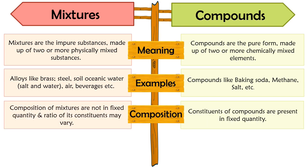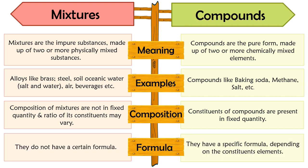Composition: the composition of a mixture is not fixed — the quantity and ratio of its components may vary. In contrast, the constituents of compounds are present in a fixed ratio. Formulas: mixtures do not have specific formulas to represent them. On the other hand, compounds have specific formulas depending upon the constituent elements.